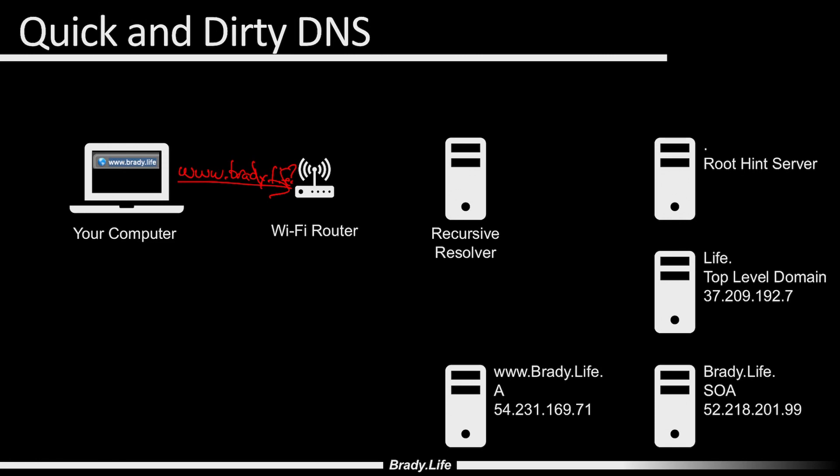Your Wi-Fi router will check its DNS cache to see if it has any records. If it doesn't, it's going to forward it to the next DNS device — the recursive resolver. In a home network, unless you've changed the configuration on your Wi-Fi router, this is going to be your ISP. So we're asking who is www.brady.life, and the recursive resolver is going to check. In this instance, it doesn't have that information cached — it doesn't even know the .life top-level domain.